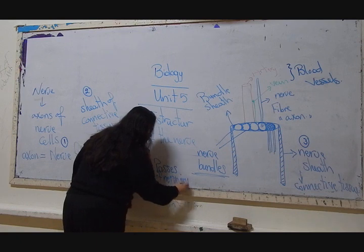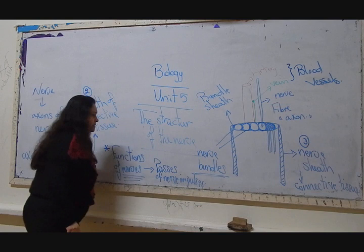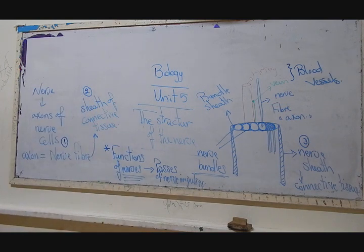That's to say they are the roads or the ways in which the nerve messages are passing from an organ to the central nervous system or from the central nervous system to an organ or a muscle.